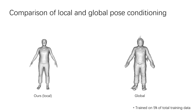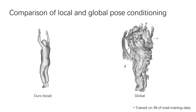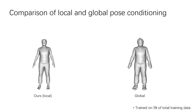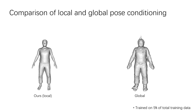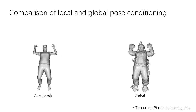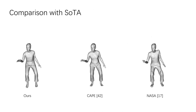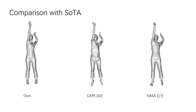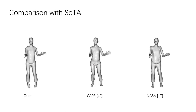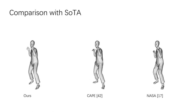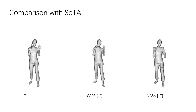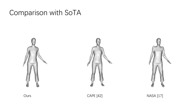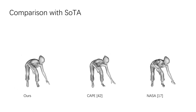While the common global pose encoding suffers from artifacts due to overfitting, our local pose encoding successfully generalizes to unseen poses even with very limited training data. Our approach outperforms state-of-the-art parametric human models with clothing learned from real-world scans. In contrast to these approaches, our method produces globally and temporally coherent results while preserving detailed wrinkles and realistic pose-dependent deformations.